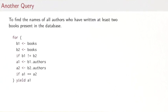A slightly more involved query is this one. We want to find the names of all authors who have written at least two books that are present in the database. A way to do this would be to have two iterators ranging over the books database. We let b1 range over books and b2 range over books.